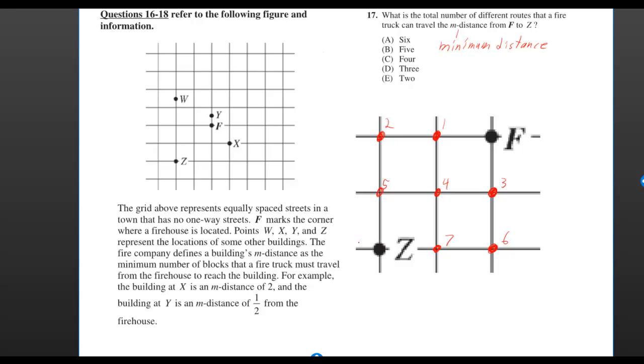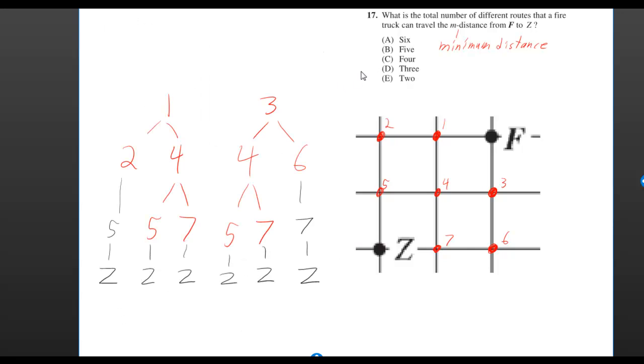Make sure you see the video right before this if you haven't done question 16. What is the total number of different routes that a fire truck can travel the minimum distance from F to Z?